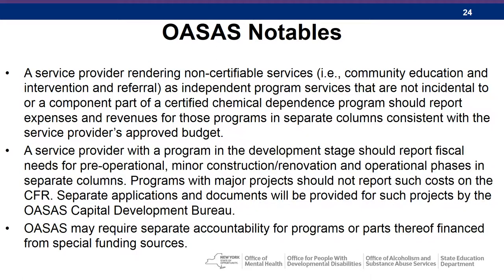A service provider rendering non-certifiable services — such as community education, intervention, and referral — as independent program services that are not incidental to a certified chemical dependency program should report expenses and revenues for those programs in separate columns. A service provider with a program in the development stage should report fiscal needs for pre-operational minor construction, renovation, and operational phases in separate columns. Programs with major projects should not report such costs on a CFR; separate applications and documents will be provided by the OASIS Capital Development Bureau. OASIS may require separate accountability for programs financed from special funding sources.